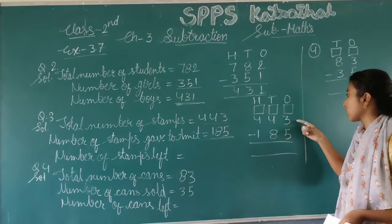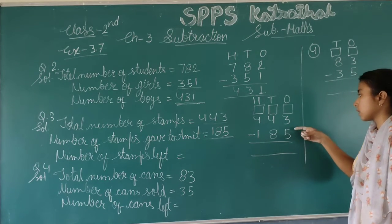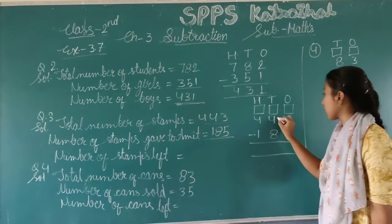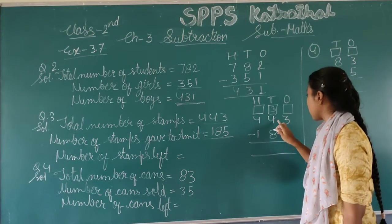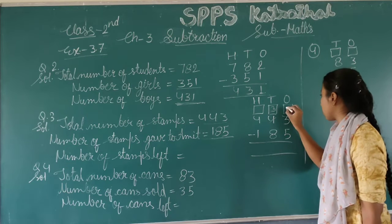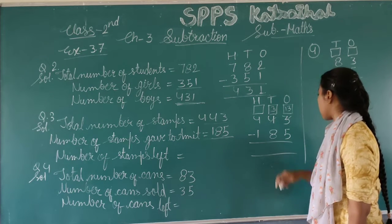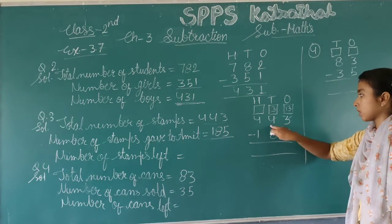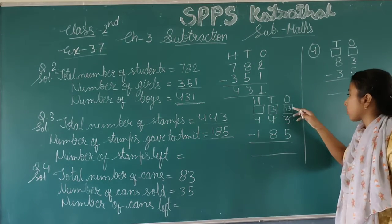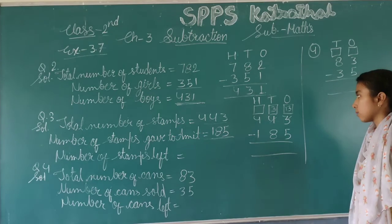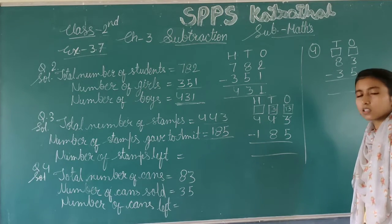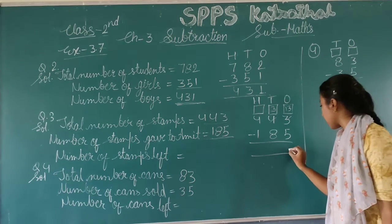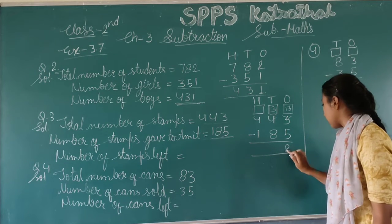So we do minus. Now, 4 minus 1 — wait, we need to borrow. With the carry, 4 minus 1 becomes 3 here. We have 13 after borrowing 10, and we add the carry of 1. Now 13 minus 8: since 13 is bigger than 8, we can subtract. Counting up from 8 to 13 gives us 5. So we write 8 here.